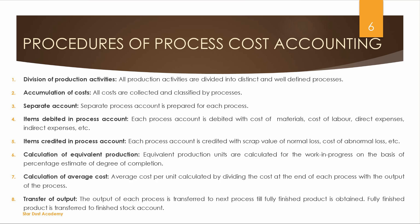Items debited in a process account include: cost of material, cost of labor, direct expenses, and indirect expenses. Items credited in a process account include: scrap value of normal loss and cost of abnormal loss. Equivalent production units are calculated for the work in progress on the basis of percentage estimate of degree of completion.